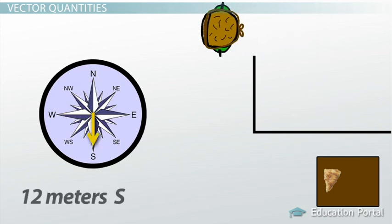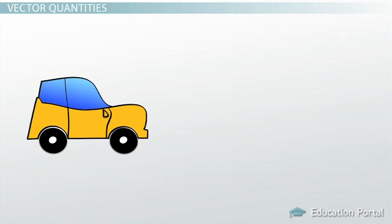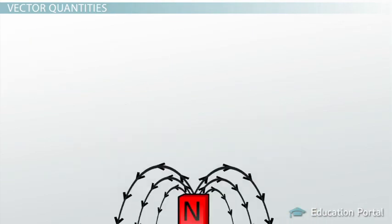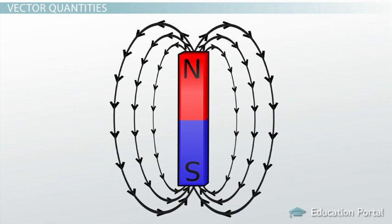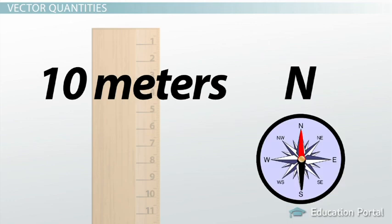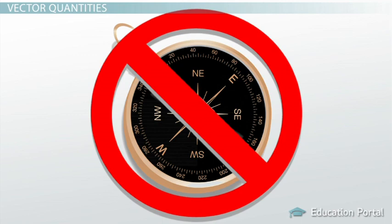You'll encounter many quantities in physics that are represented as vectors. Acceleration, displacement, velocity, and electric and magnetic fields. It's important to remember that you need both a magnitude, 10 meters, and a direction, north, to fully represent the vector. Forgetting to add the direction can lead to you getting questions wrong, even if you calculate all the magnitudes correctly.